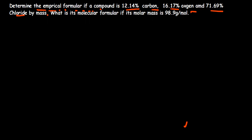The question is: we determine first of all the empirical formula, and then they are continuing — what is the molecular formula if its molar mass is 98.9 grams per mole? We are going to use this information to find the empirical formula.